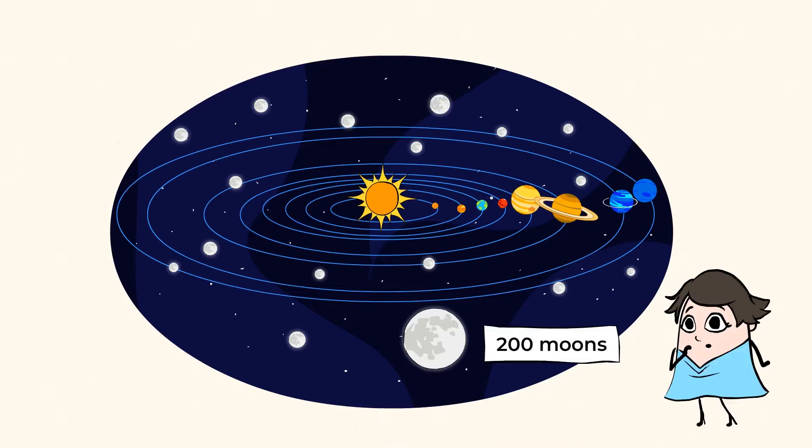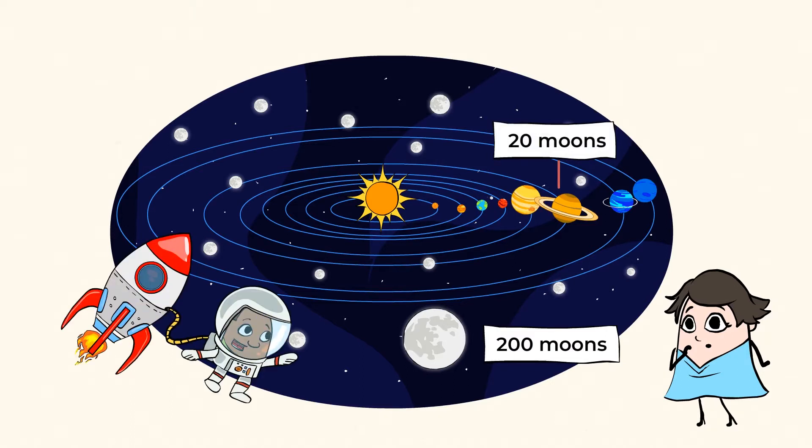That's right, there are planets that have up to 20 moons. But today, we will focus on our one moon. So buckle up, we're about to have a mighty trip to the moon and back. Here we go.